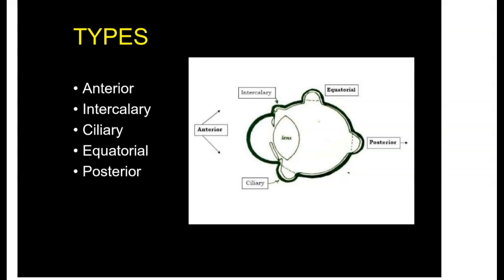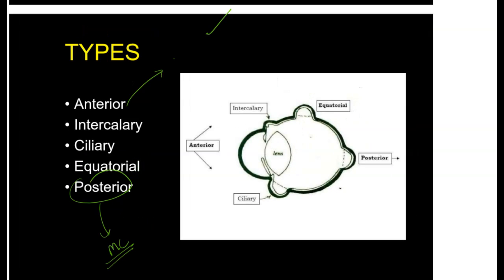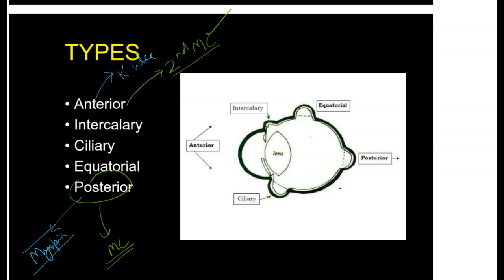Out of these five types, the most common is posterior Staphyloma and the second most common is anterior Staphyloma. The most common cause of Staphyloma overall is high axial myopia or pathological myopia, because the most common type happens to be the posterior Staphyloma. The most common cause of anterior Staphyloma is a perforating corneal ulcer.